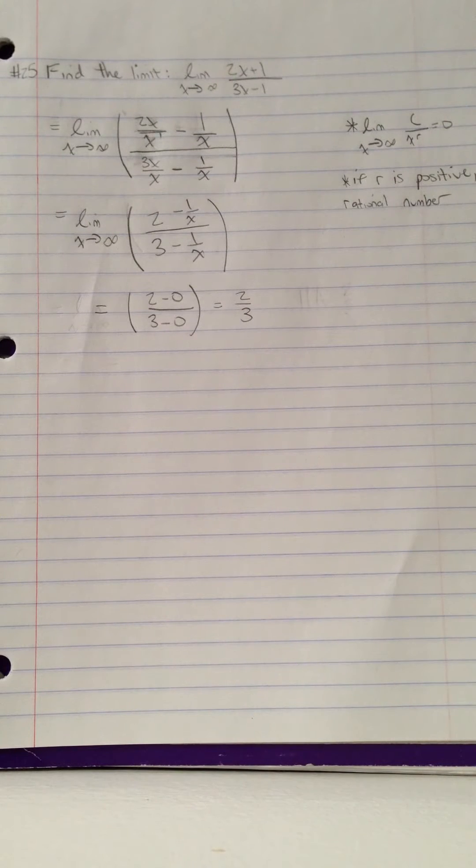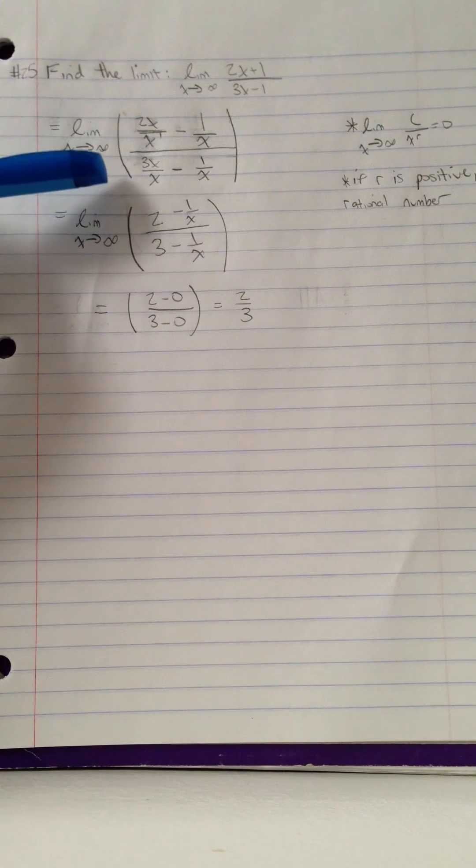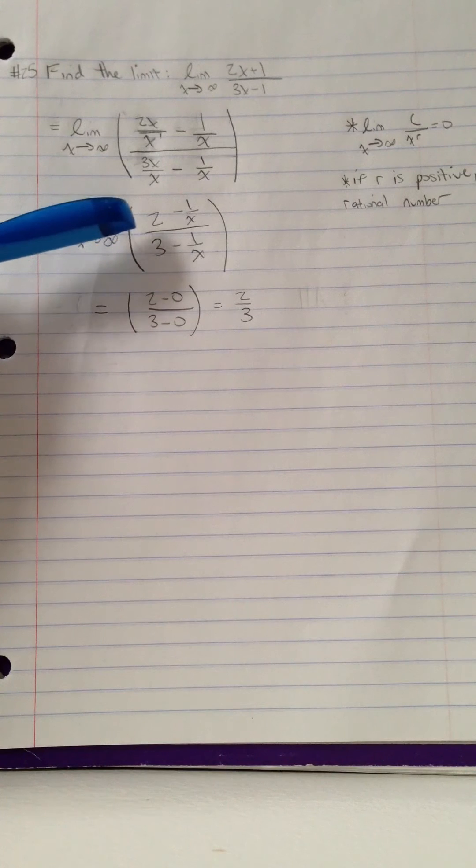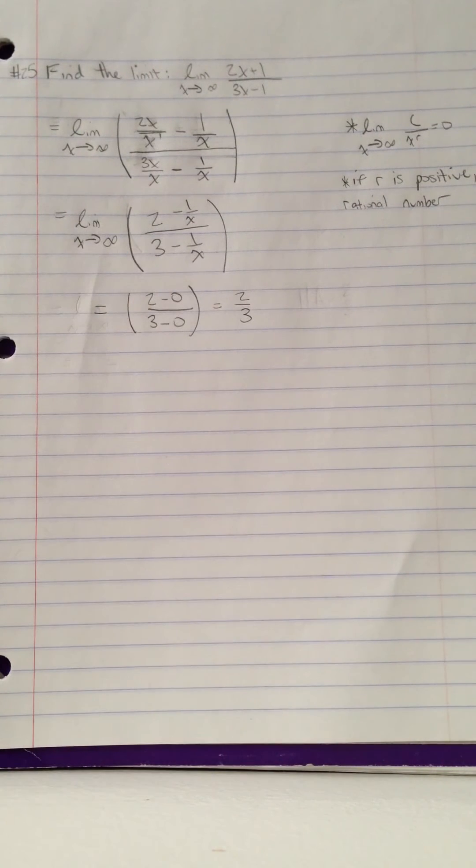The first thing we can do is cross off the x's, take off this x and this x and this x over this x, to give you 2 minus 1 over x divided by 3 minus 1 over x.